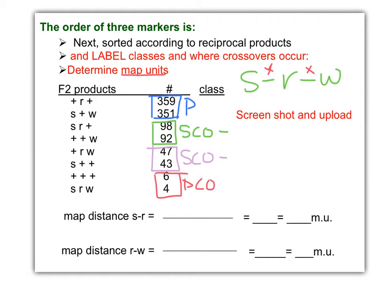Here's single crossover. Here's a single crossover class, right? We know the middle numbers have to be the single crossovers because the highest numbers are parental. The lowest numbers are the double crossover. The middle have to be SCO. So how do we know? If we're trying to find the distance between S and R, or R and W, R and W.